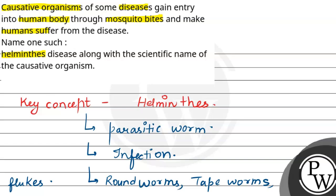And then we have flukes which we call trematodes. Some helminth diseases are transmitted to humans through bites of infected mosquitoes, where mosquitoes act as a vector.